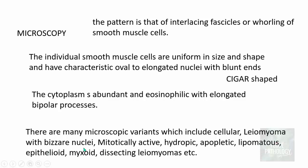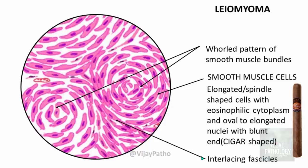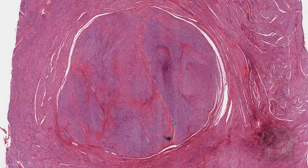There may be many microscopic variants of leiomyoma which includes cellular leiomyoma, leiomyoma with very bizarre nuclei. They can be mitotically active leiomyoma. They can show hydropic degeneration, they can be apoplectic, they can be lipomatous, epithelioid, myxoid, decidualized leiomyoma etc. Now for you as undergraduate just note that these leiomyomas are composed of interlacing fascicles of these smooth muscles which contain elongated or spindle shaped cells with an oval or elongated nuclei with blunt ends. Look at these nuclei, they are like a cigar.